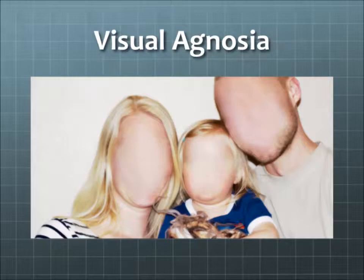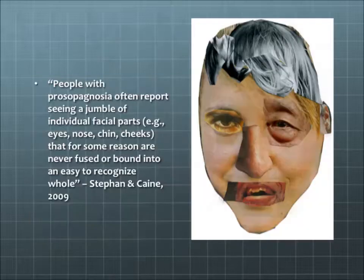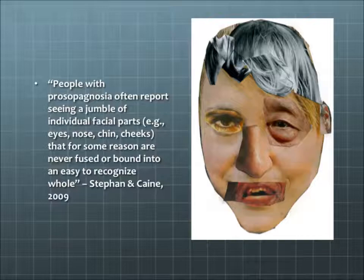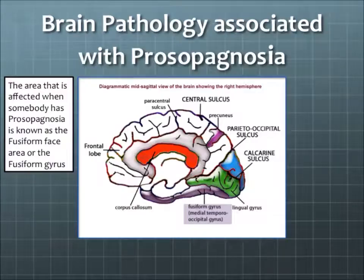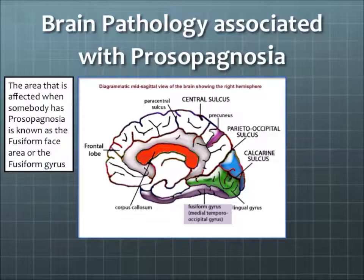Although visual agnosia can be a genetic disorder, there is also evidence that it can be caused by brain damage. Each particular type of agnosia is thought to be related to a damaged part of the secondary visual cortex. The part that may be damaged would determine what type of agnosia the person has.